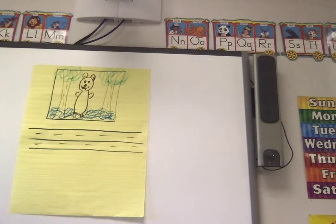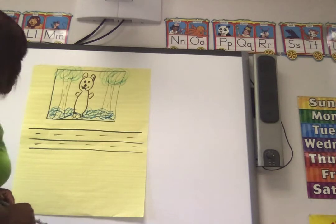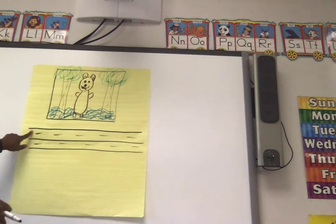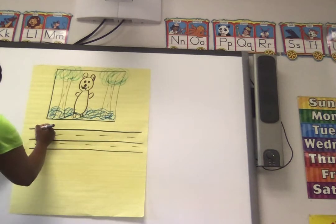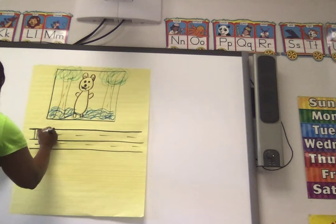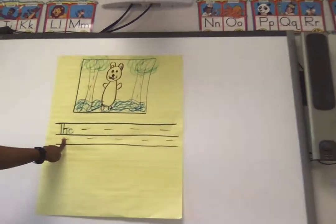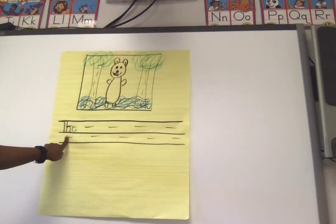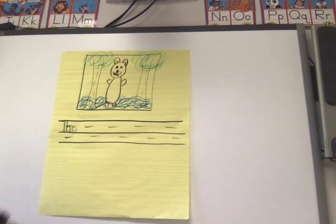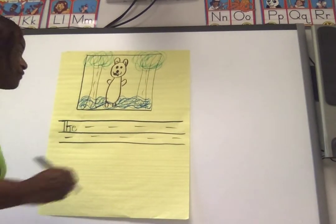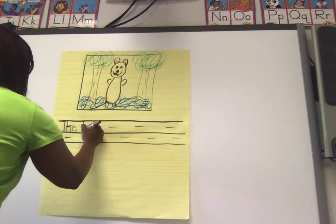The bear is eating fish. 'The' — 'The' is a lightning word. Why does it start with uppercase T? T-H-E. Lightning words we need to spell correctly. When you see lightning words, they need to be spelled the right way. 'Bear' — buh, buh, buh. What's the first letter? B. Finger space. Stretch it out: buh, eh, err.